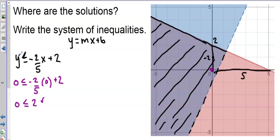If y is by itself, you can look to see if it's shaded below or above. If it's shaded below, you'll have less than; if it's shaded above, you'll have greater than. But if you're not sure, always try a test point — it will work. And it is less than or equal to here because this is a solid line.